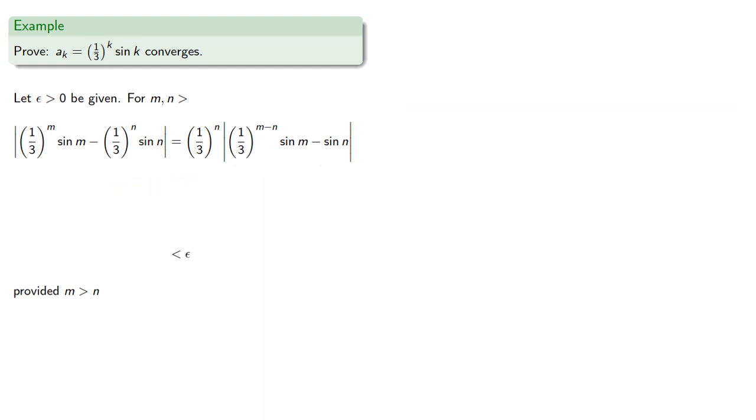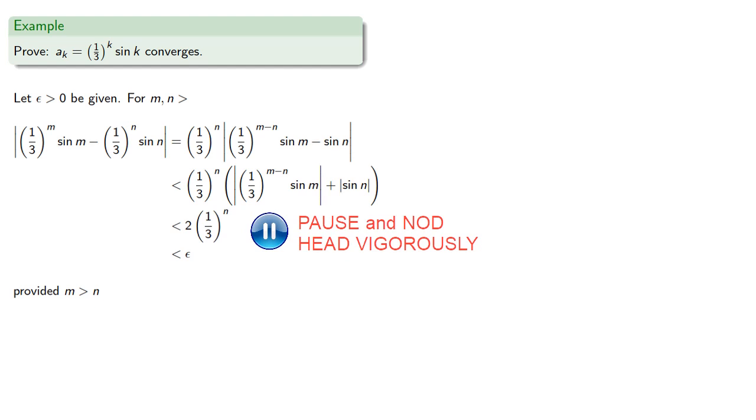And now, because this is the absolute value of a difference, we can split it. And because these are sine multiplied by something, we know that these are going to be both less than one. So this is going to be less than. And remember we want this to be less than epsilon.